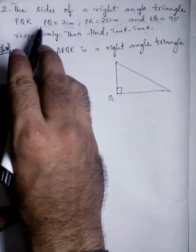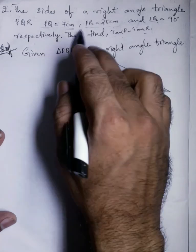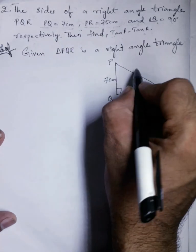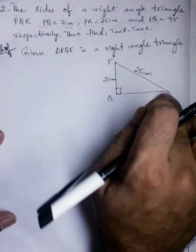Then next PQ. PQ is 7 cm. QPR. PR is 25 cm. PR is 25 cm.